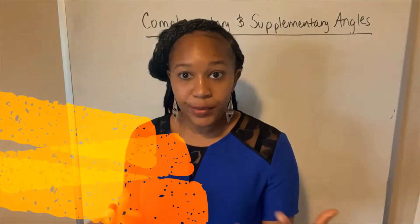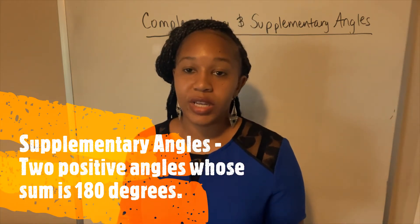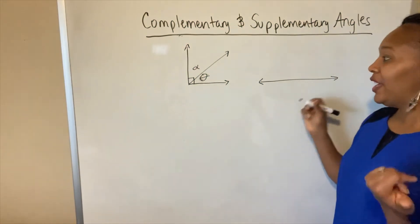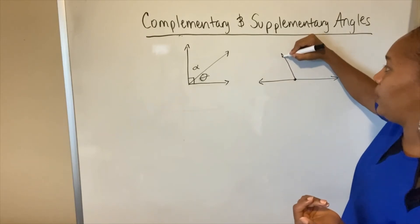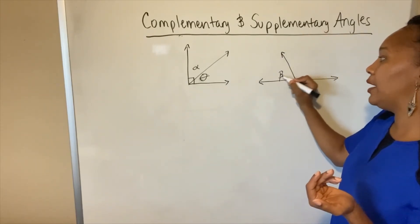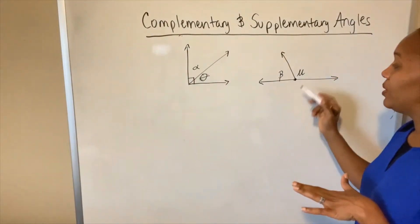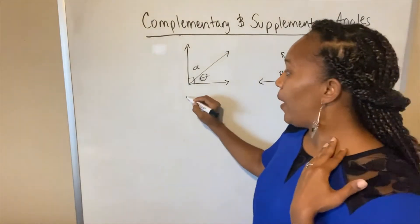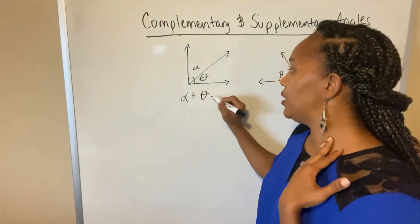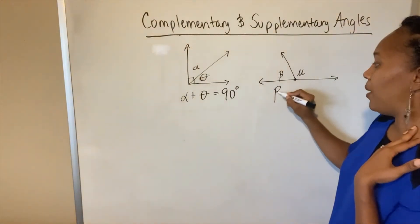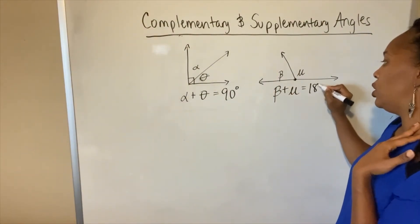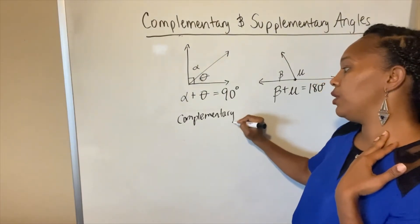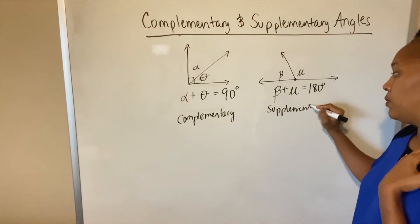Supplementary angles are two angles whose sum is 180 degrees. That's when you take two angles, add them together, and they give you 180 degrees. Remember, the 180-degree angle is the straight angle. I could take a line ray and place it anywhere along the straight angle, breaking it into two angles — let's call them beta and mu. Beta and mu are supplementary angles because together they create a straight angle. Mathematically, we write alpha plus theta equals 90 degrees for complementary angles, and beta plus mu equals 180 degrees for supplementary angles.